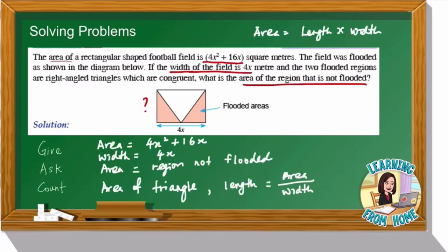To solve this problem, we must follow three simple steps, which are: give, ask, and count. What is meant by 'give'? Give refers to the information that is given from the question.